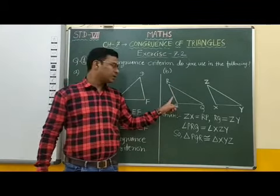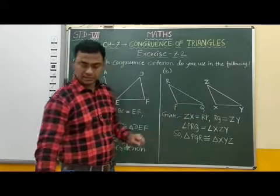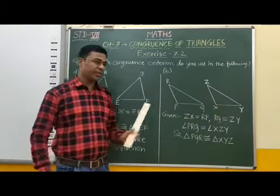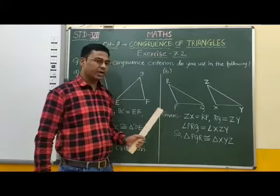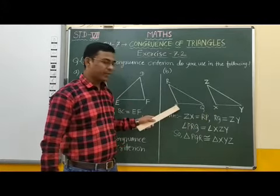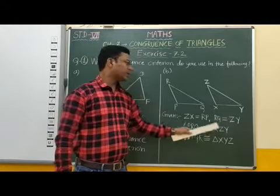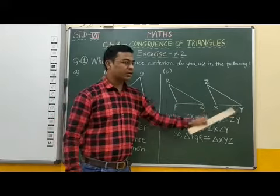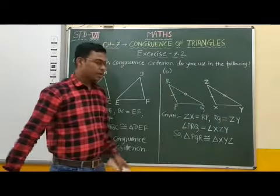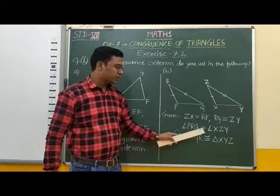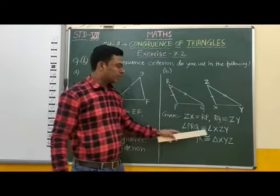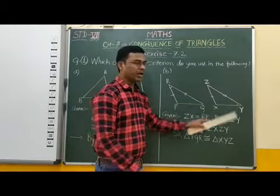Next question: two congruent triangles are given — triangle PQR and triangle XYZ. Between these two triangles, the corresponding equal parts are: ZX is equal to RP, RQ is equal to ZY, and angle PRQ is equal to angle XZY. So two sides and the angle between them are identified as equal.